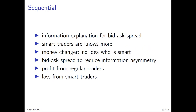The next model we are going to cover is the sequential trade model. Instead of a transaction cost-based approach, it is an information-based approach to explain bid-ask spread. The idea is that there are some smart traders who know more, but the market maker has no idea who is smart. In order to avoid being exploited by smart traders, the bid-ask spread is set to reduce the information asymmetry problem. By setting the buying price higher than the selling price, the market maker can profit from trading with regular traders, but will always make losses when trading with smart traders. So the bid-ask spread size represents the degree of information asymmetry in the market.